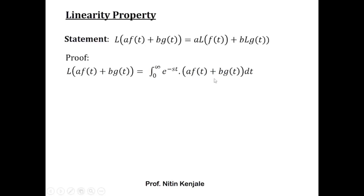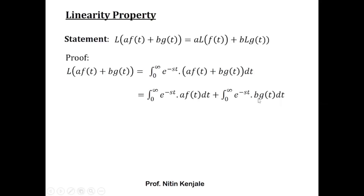Now we distribute this integral over the addition, so we have the integral of e^(−st)·a·f(t) dt plus the integral of e^(−st)·b·g(t) dt. Since a and b are constant terms, we can take them out of the integrals, giving us a times the integral of e^(−st)·f(t) dt, plus b times the integral of e^(−st)·g(t) dt.